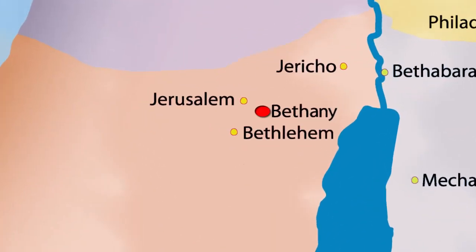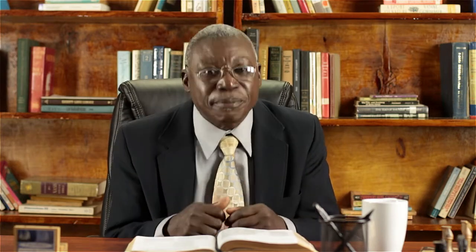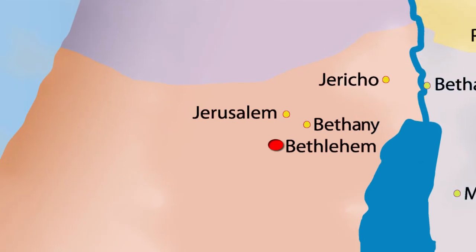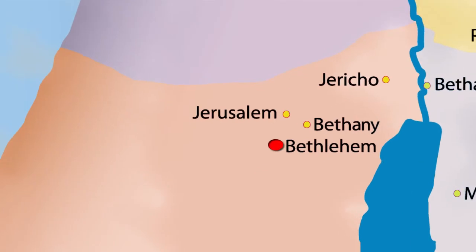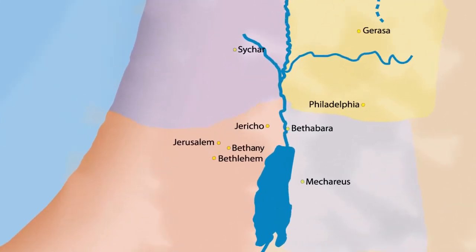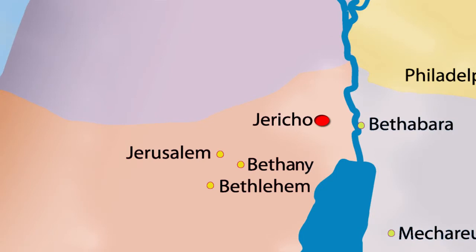Bethany is another town in Judea. It was the home of Mary, Martha, and Lazarus. It was a suburban town on the outskirts of Jerusalem and acted as Jesus' base while in Jerusalem. Bethlehem acted as a provincial town in a rural area where people kept flocks. It was the city where Jesus was born, as was prophesied by the Old Testament prophets. Jericho lay along the river Jordan and is the town that Jesus used in his parable about the Good Samaritan.